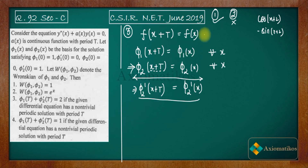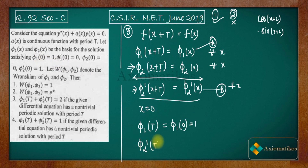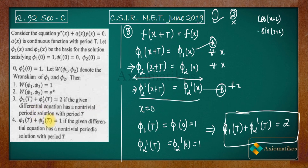Using equation (a): φ₁(x + t) = φ₁(x), and equation (b): φ₂'(x + t) = φ₂'(x), substitute x = 0. We get φ₁(t) = φ₁(0) = 1, and φ₂'(t) = φ₂'(0) = 1. Therefore φ₁(t) + φ₂'(t) = 2, which means the third option is correct and the fourth is incorrect.